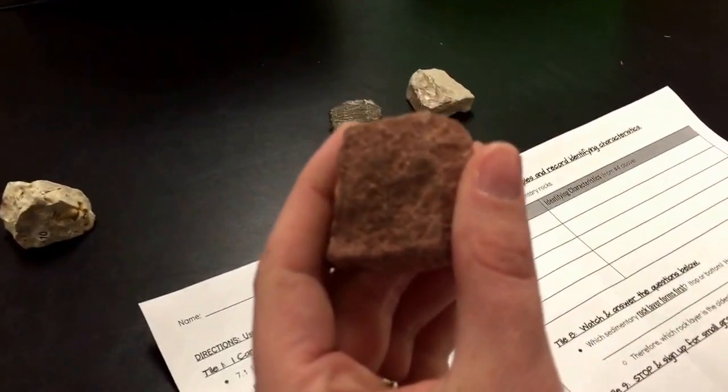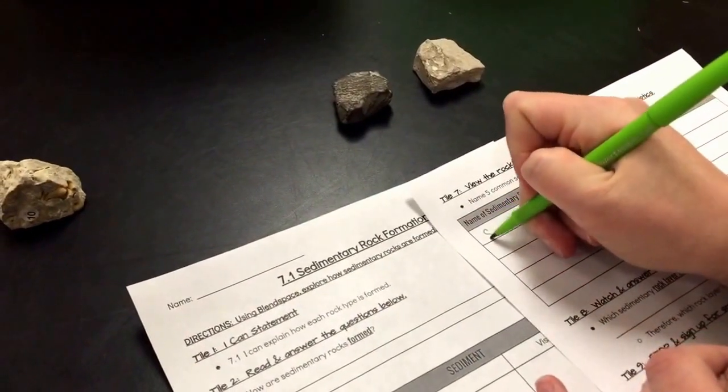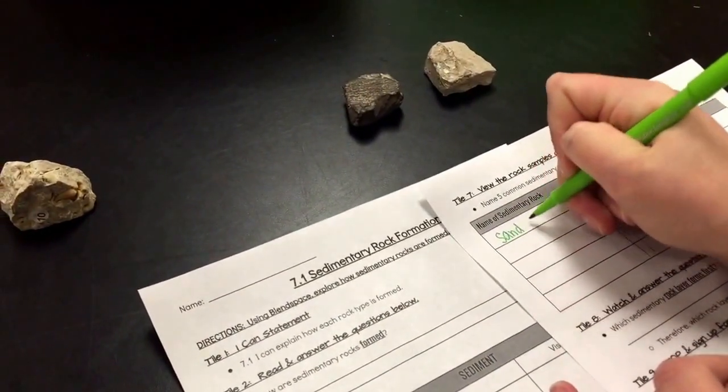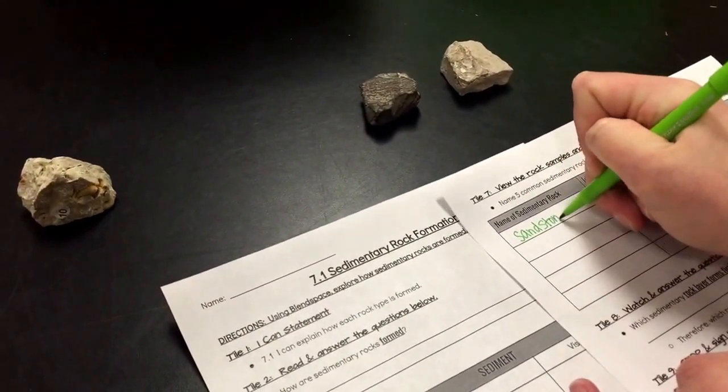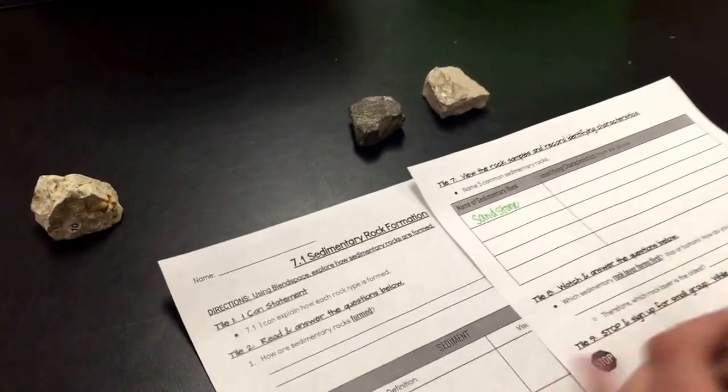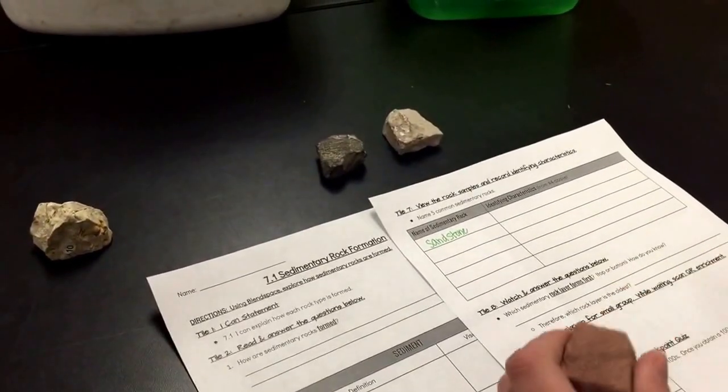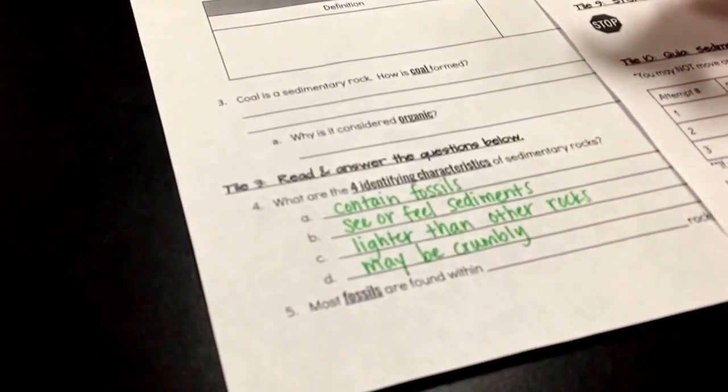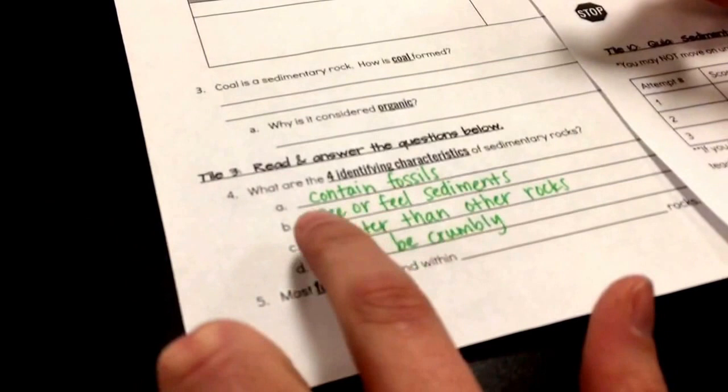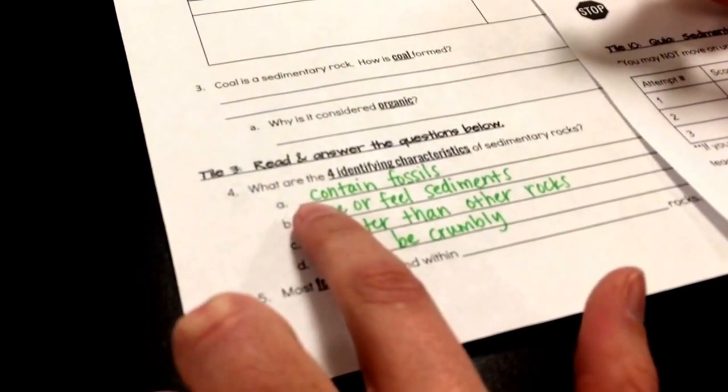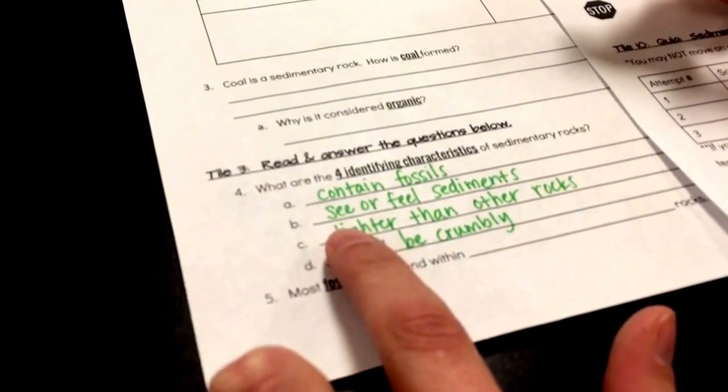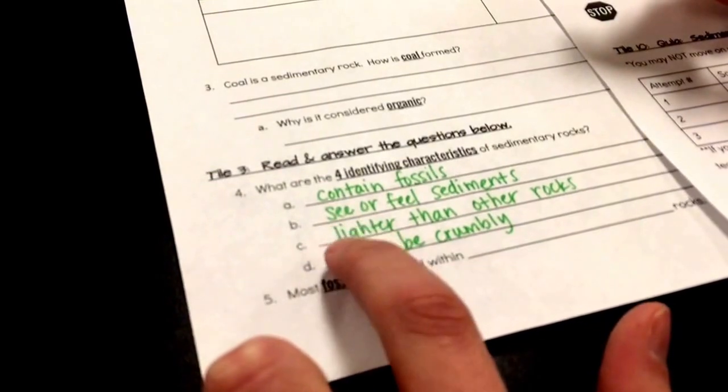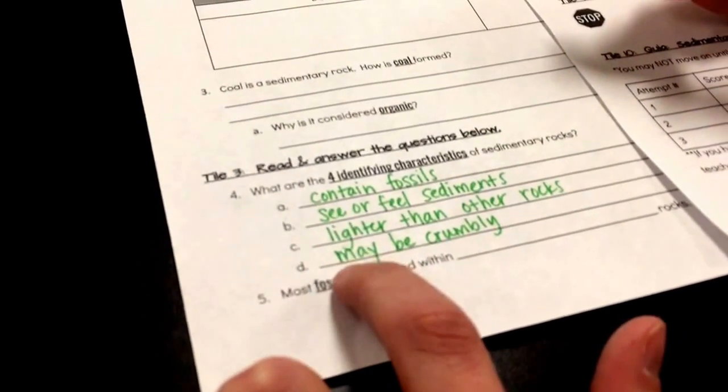Okay, and what I need to do is I need to decide what the identifying characteristics are of this rock to make sure to tell me that it is sedimentary. So I have four choices: if it contains fossils, can I see or feel sediments, is it lighter, or it may be crumbly.